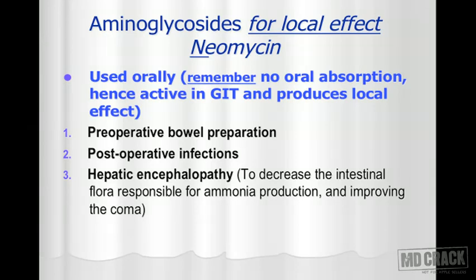The third important and very different use of neomycin is in hepatic encephalopathy. In hepatic coma, there is increased production and accumulation of ammonia in the central nervous system, responsible for CNS depression and coma. Part of this ammonia comes from microorganisms present in the intestines. As long as there are more microorganisms multiplying in the intestine, they produce more ammonia, worsening the coma. We give neomycin orally — through a nasogastric tube — to decrease the intestinal microflora.